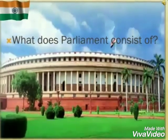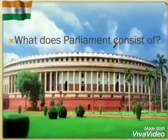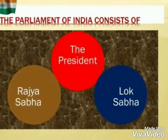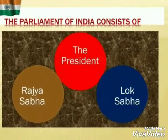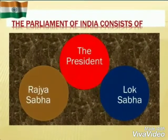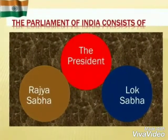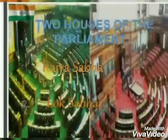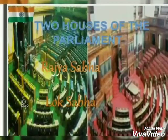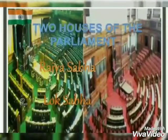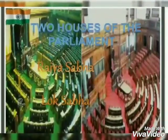The Lok Sabha is called the House of the People because its members are elected directly by the people. The Lok Sabha cannot have more than 552 members. Out of these, 530 members are elected from the states and 20 members are elected from the Union Territories. Seats are allotted to each state on the basis of its population. The President of India can nominate two members from the Anglo-Indian community if he feels that the community is not adequately represented.